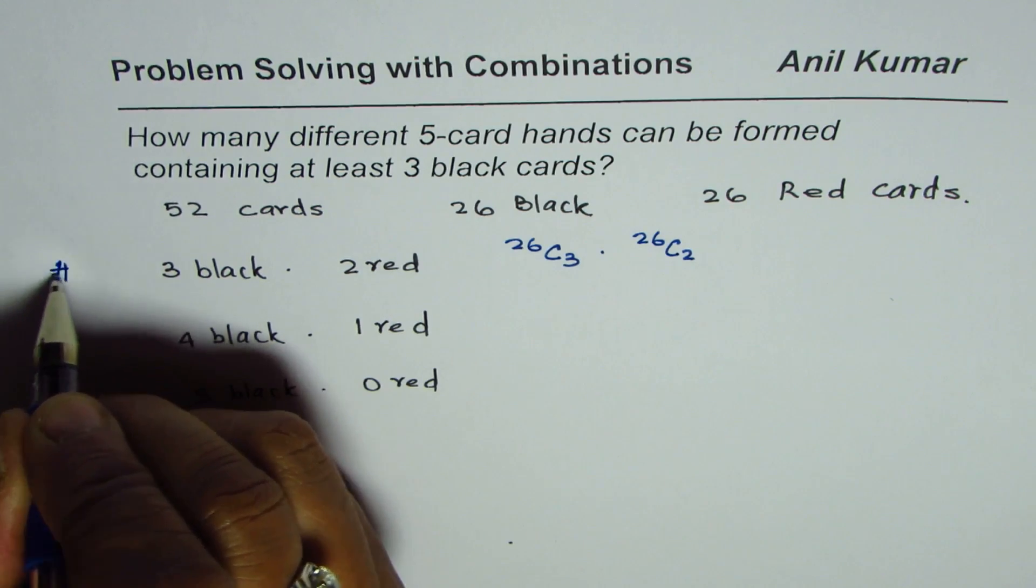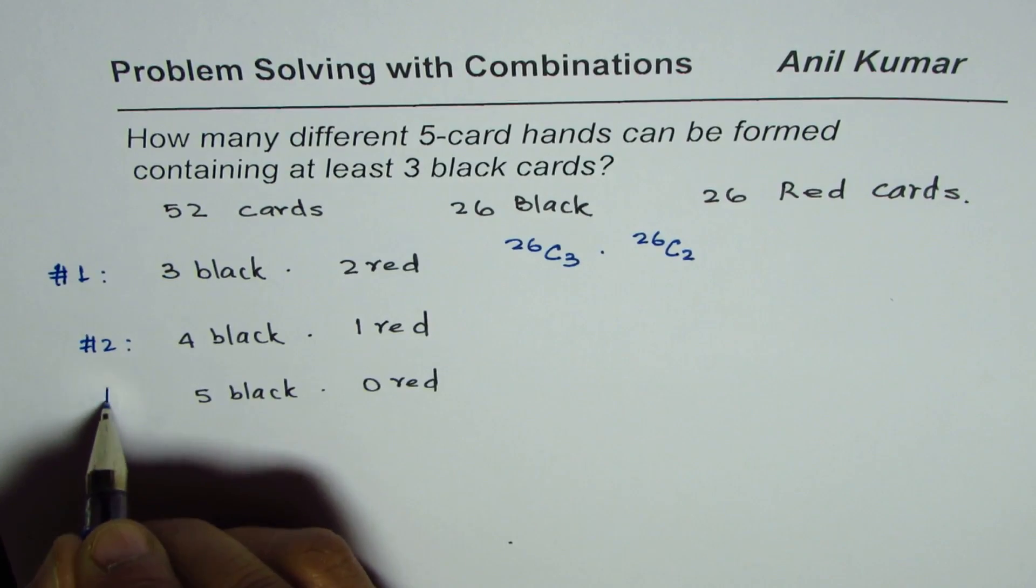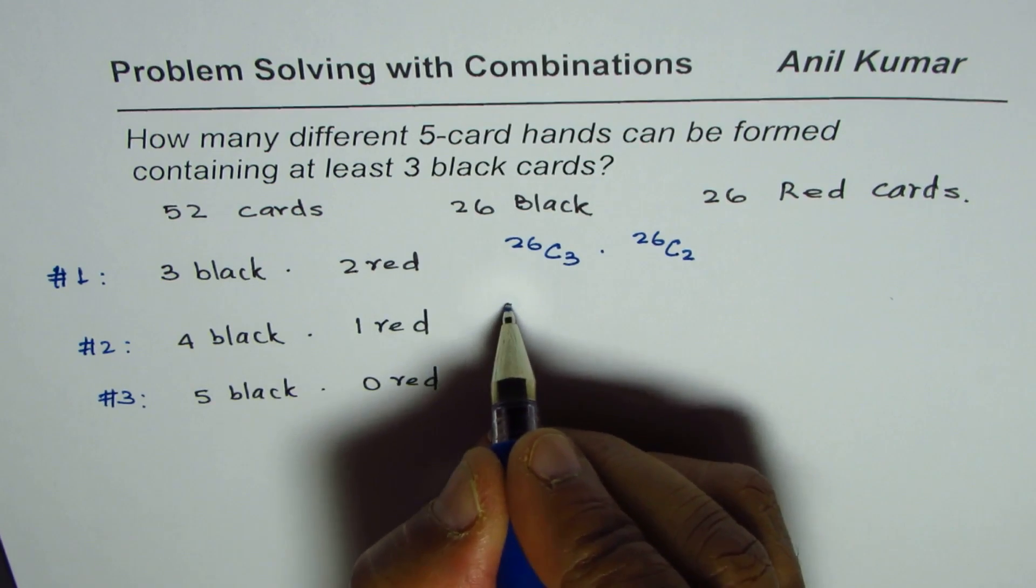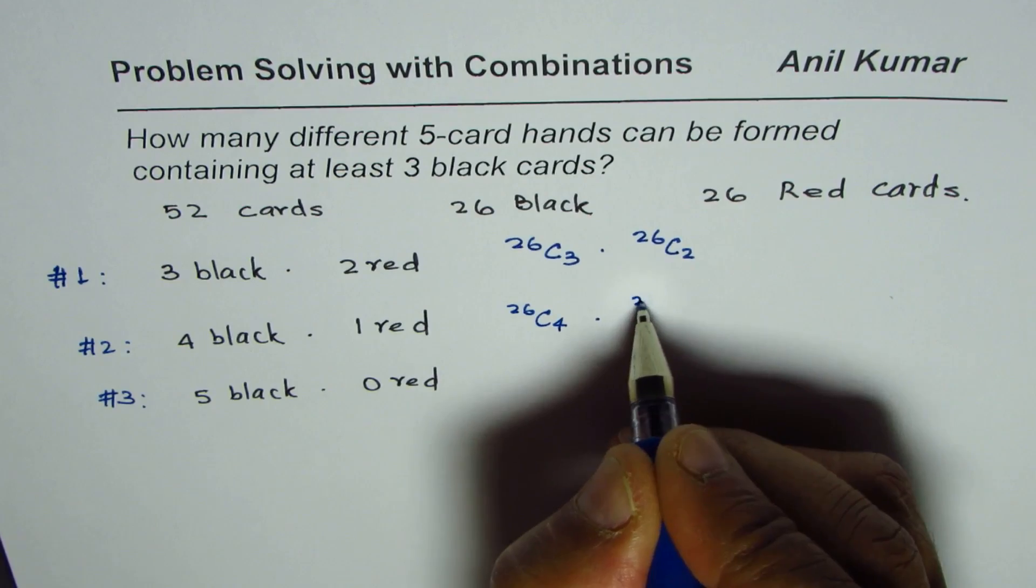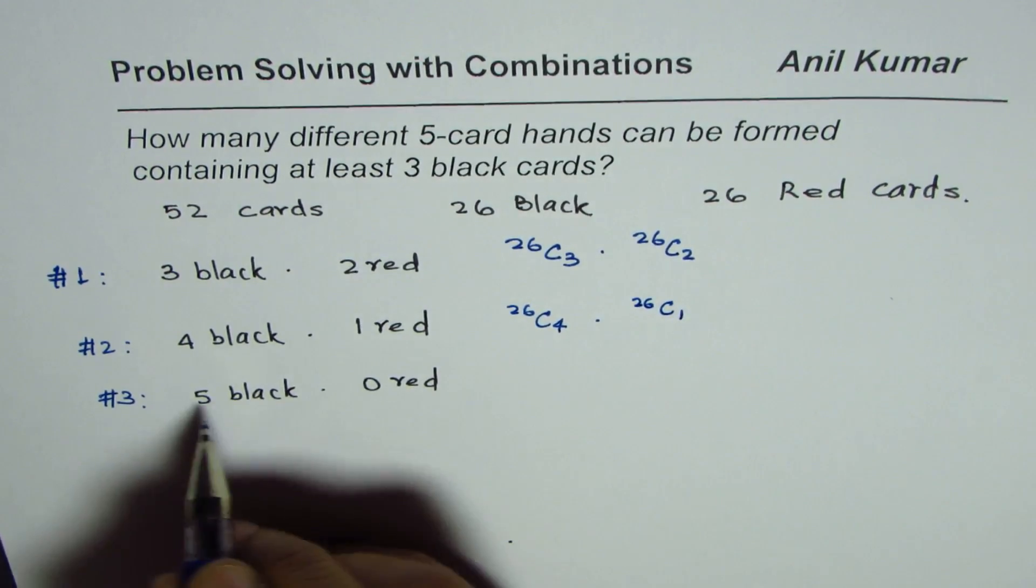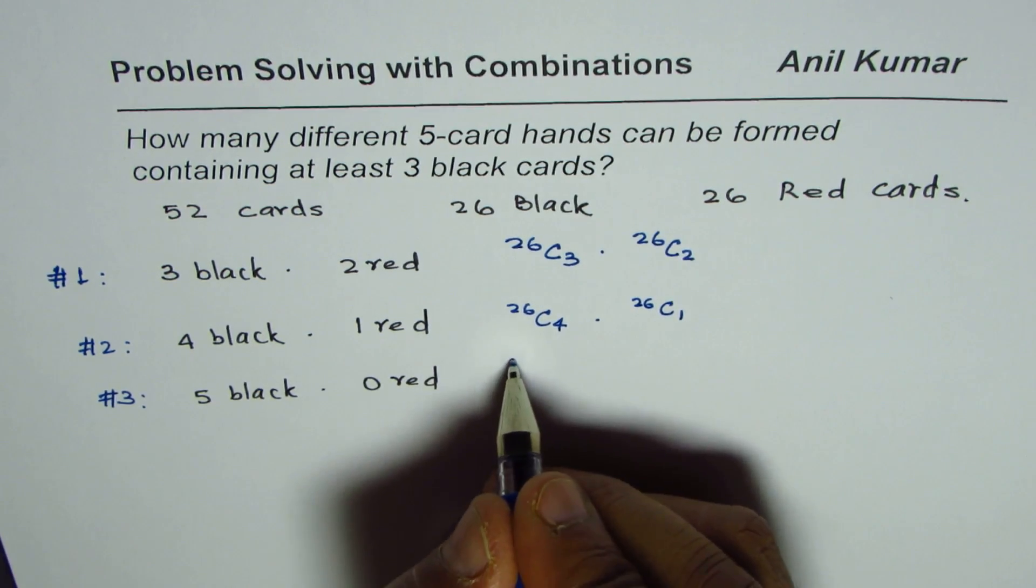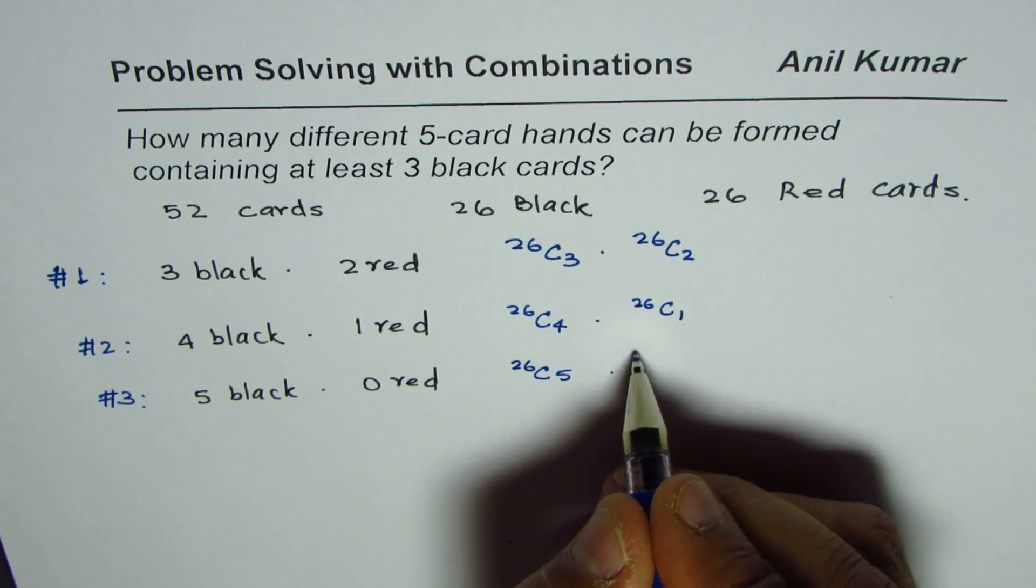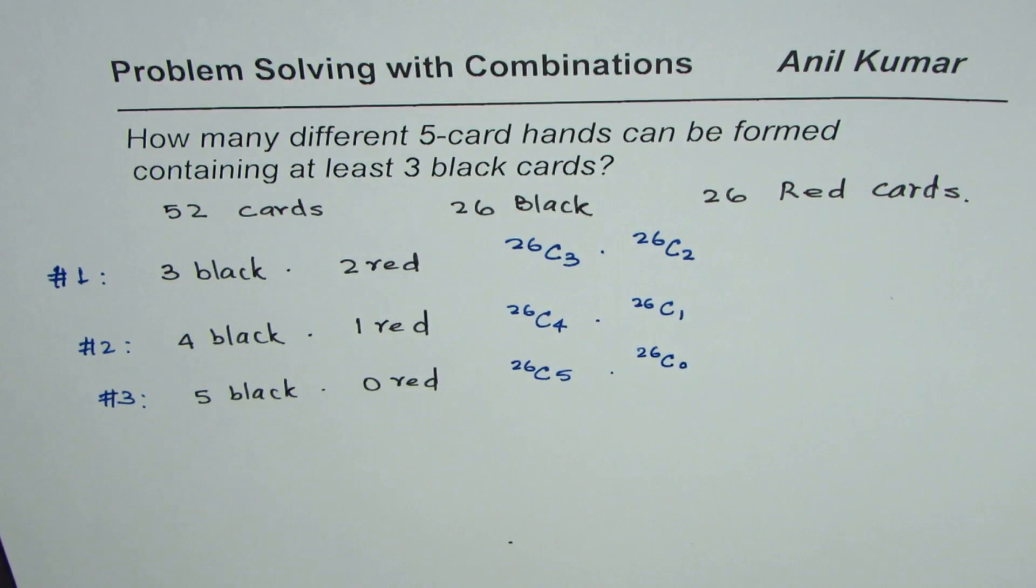For the second case, so this is case one, case two, and case three. Four black cards out of 26 means 26C4. One red out of 26 means C1. Five black out of 26 means all are black in this case. C5. None of them is red, so 26C0, right?